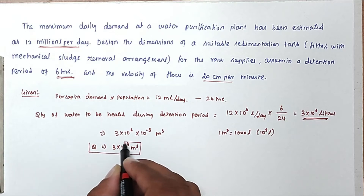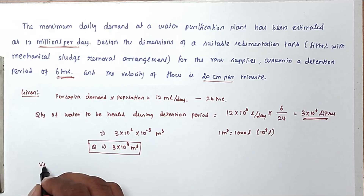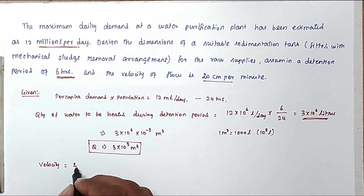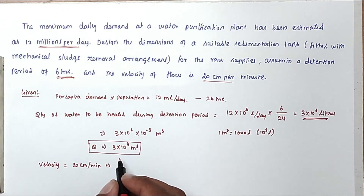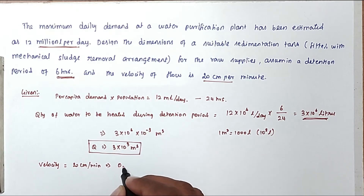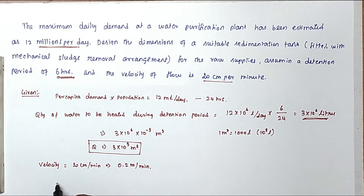Now for the velocity: the velocity is given as 20 centimeters per minute. Converting to meters per minute, that gives us 0.2 meters per minute.